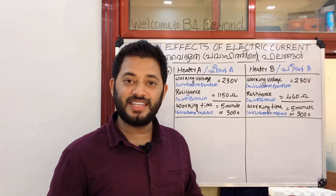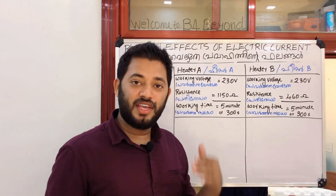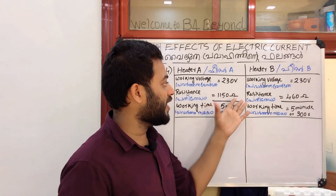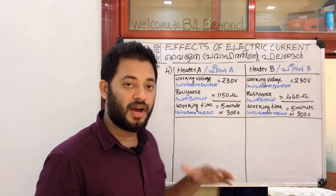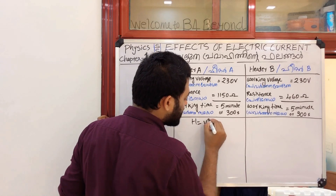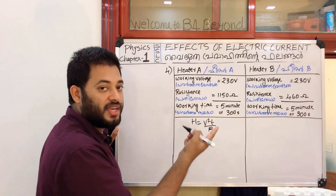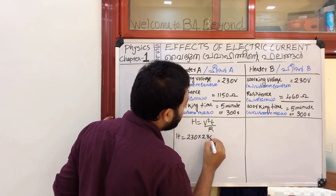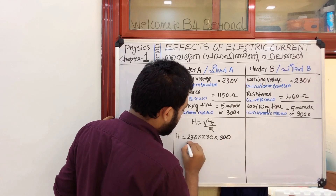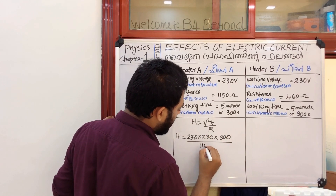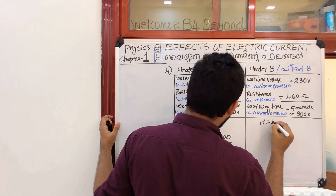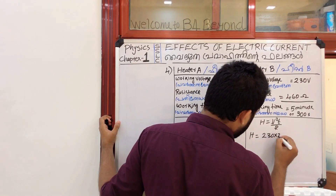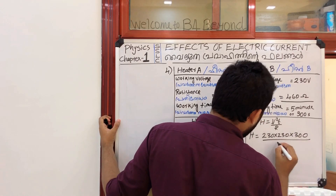We have a given data and we have to mark the equation. We need to find heat with voltage, resistance, and time. So the equation is H equals V squared T by R. We substitute: H equals 230 into 230 into 300 divided by 460.